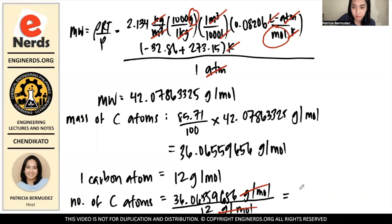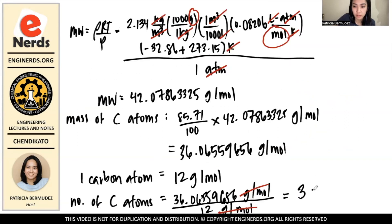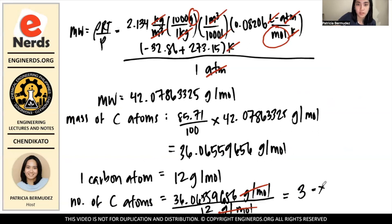We can see that grams per mole cancels. So the number that's unit-less remains. So 36 divided by 12, we have 3. So we have found the value for x. Our x is equal to 3.